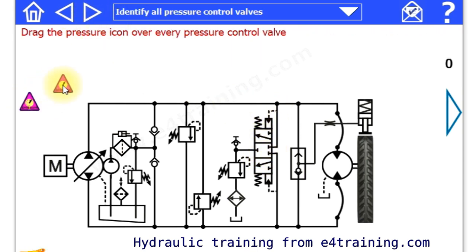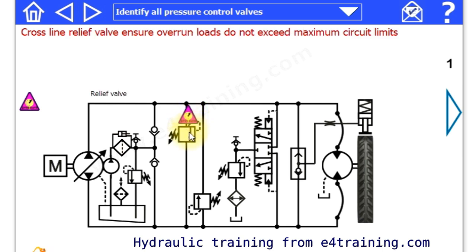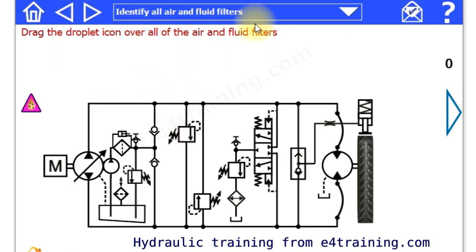And again we've got another little exercise. So you have to find the pressure control devices or flow control. So we've got filtration elements. So we've got various little exercises.